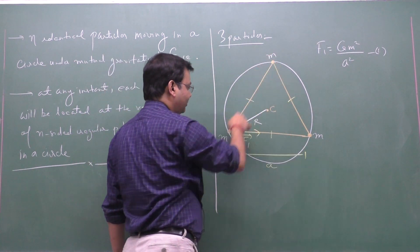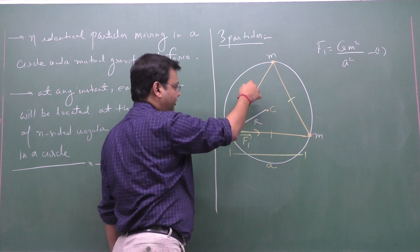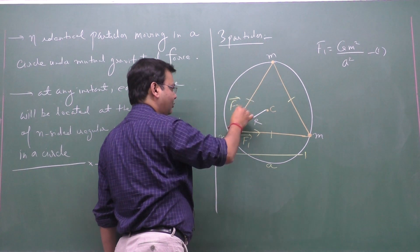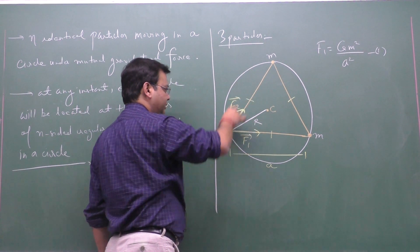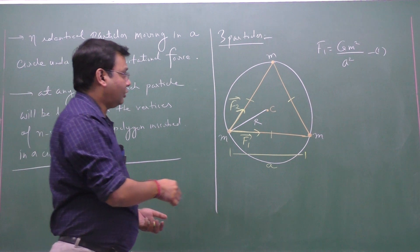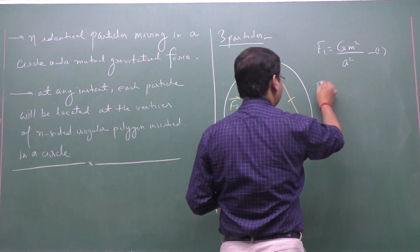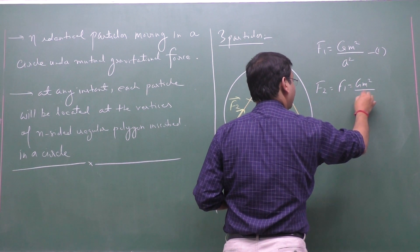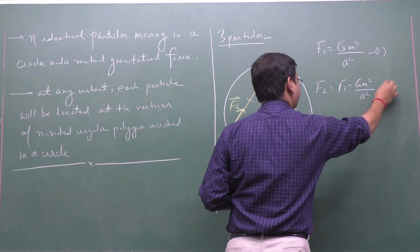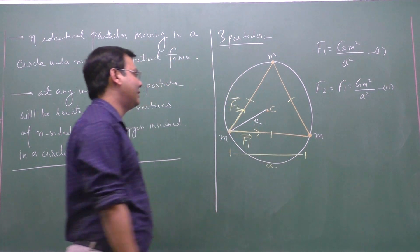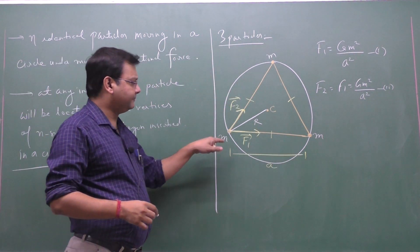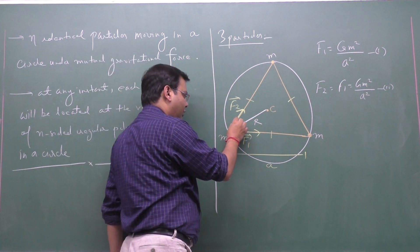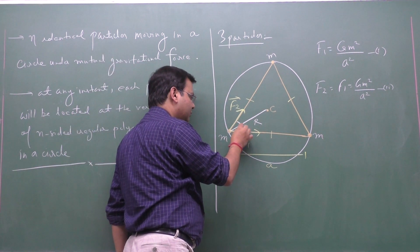The third particle exerts force F2 along the line joining that pair. The magnitude of F2 equals F1, since the pair of masses is the same and the distance is also the same. Now we need to find the net force on the particle. The angle between F1 and F2 is 60 degrees.